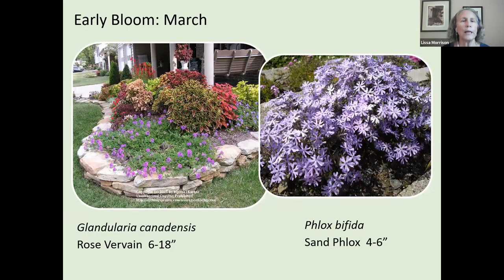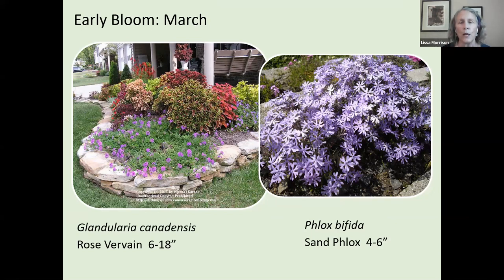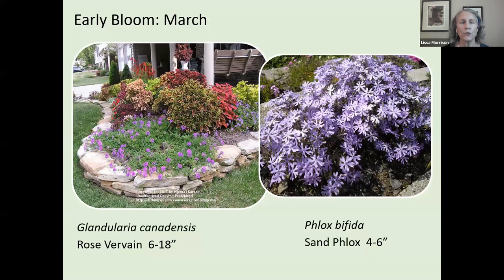Moving on with individual plants — rose vervain is an excellent plant that spreads like a ground cover and blooms for a long time, but needs good drainage. It blooms early, then when summer hits it gets ratty. At the botanical gardens, we would cut it back to about six inches, and then it regrows and re-blooms for fall. Sand phlox similarly needs good drainage — the gritty, gravelly soil that drains well.